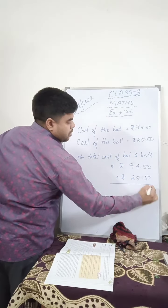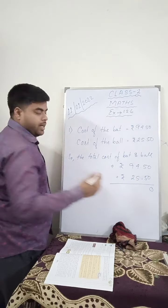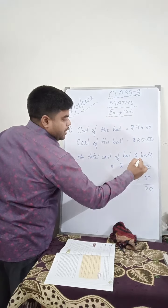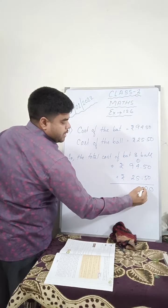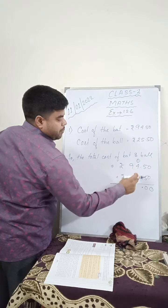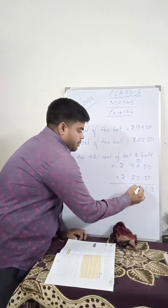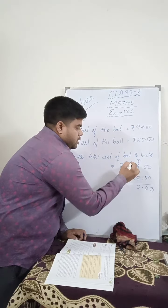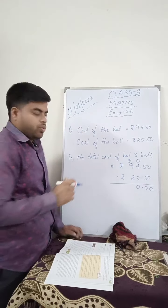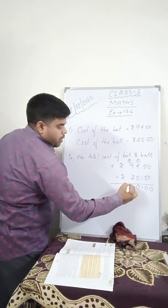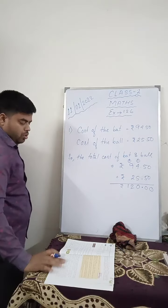Add: 0 plus 0 is 0. 5 plus 5 is 10, write 0, carry 1. Put the decimal. 4 plus 1 is 5, 5 plus 5 is 10, write 0, carry 1. 1 plus 9 is 10, 10 plus 2 is 12. So the total is Rs. 120.00.